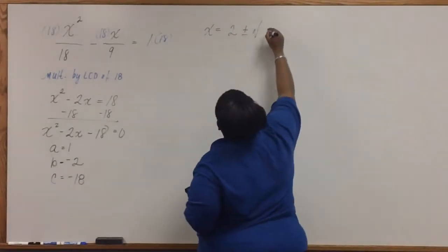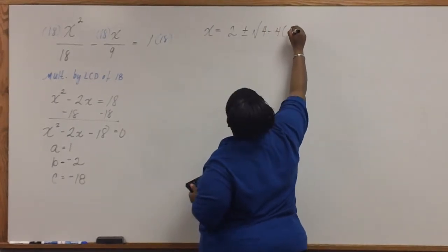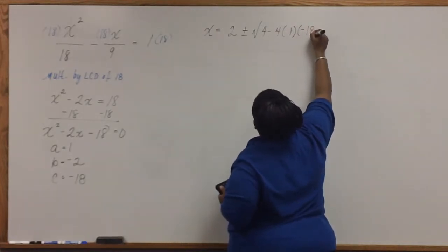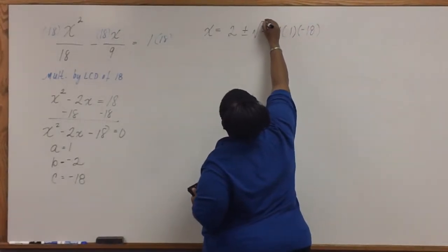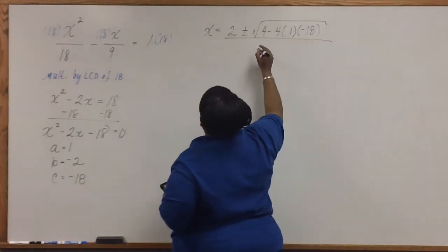Squaring our B, we have 4 minus 4 times A times C, all over 2 times A.